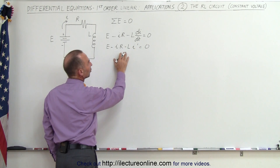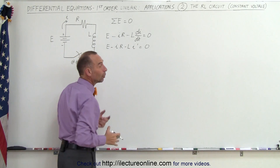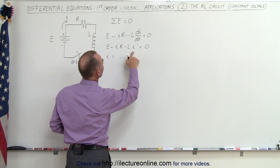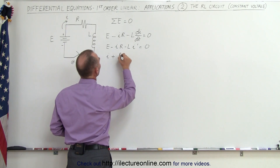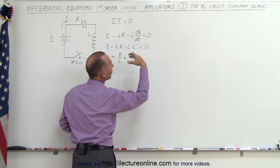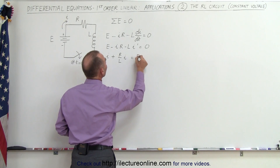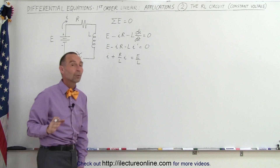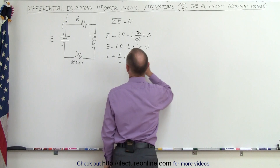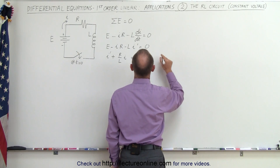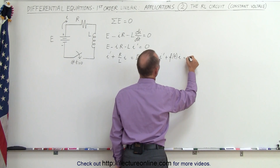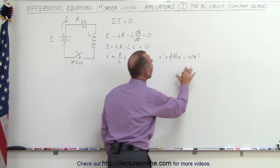Rearranging the terms, dividing both sides by L, and multiplying both sides by negative one, we get I prime plus R over L times I equals E over L. That is the standard form — I prime plus some function of time times I equals some other function of time — the standard form of the first-order linear differential equation.